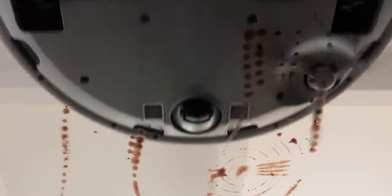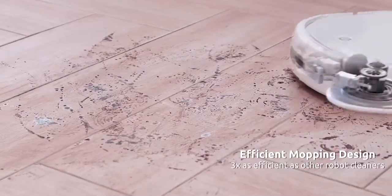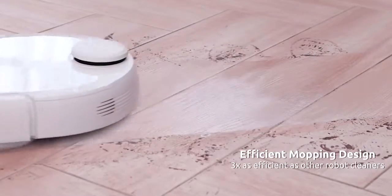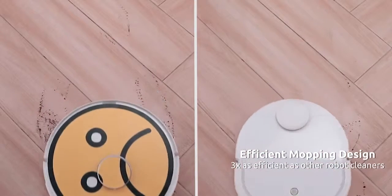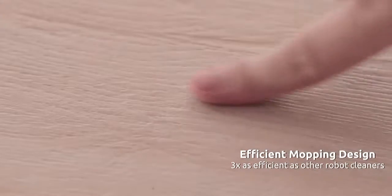Other robot cleaners that claim to mop only sweep the floor. Narwhal has reinvented the mop with rounded triangular mops that press down on the floor and rotate to really clean away those stubborn stains. Narwhal mops clean three times as efficiently versus other robot cleaners.